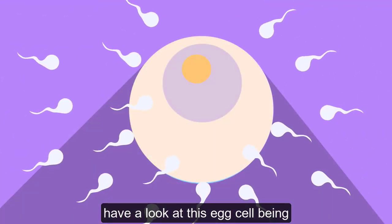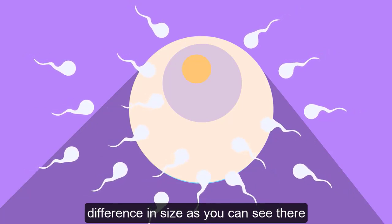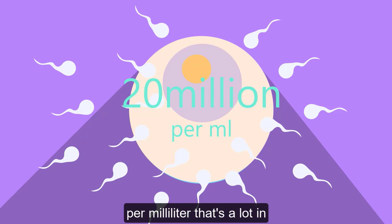Have a look at this egg cell being fertilized and you can see the difference in size. As you can see, there is a lot of sperm. An ejaculation varies but contains at least 20 million sperm per milliliter. That's a lot.